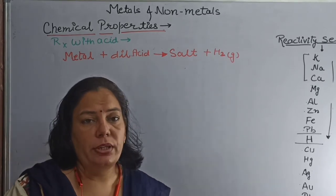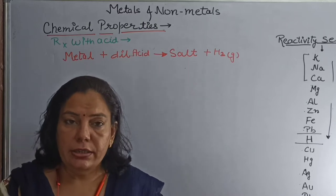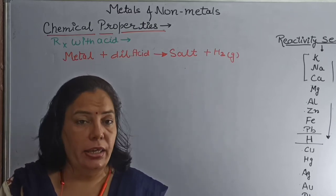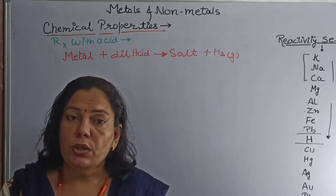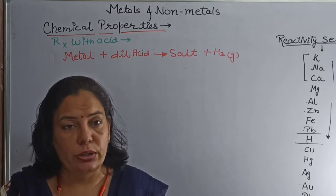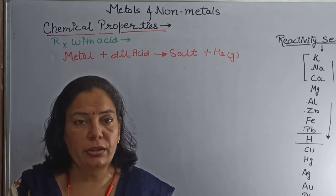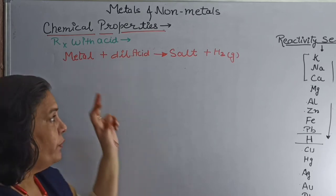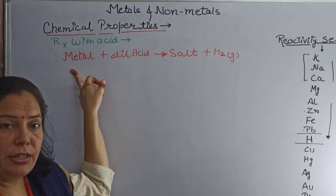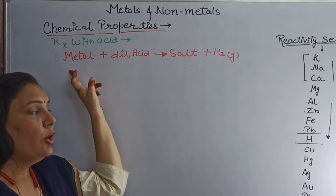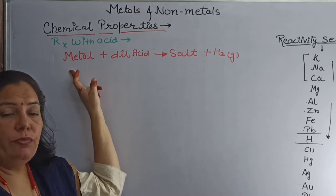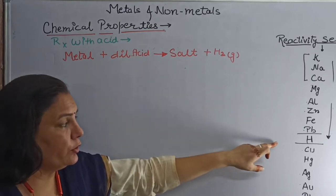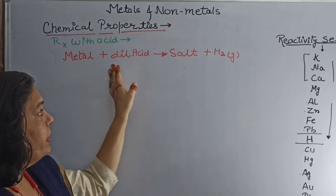The characteristic properties of hydrogen gas are: it is colorless, odorless, lighter than air, highly inflammable, and insoluble in water. The overall reaction depends on two factors. First is reactivity of metal — whether the metal is highly reactive, moderately reactive, or less reactive than hydrogen. Second is the acid.